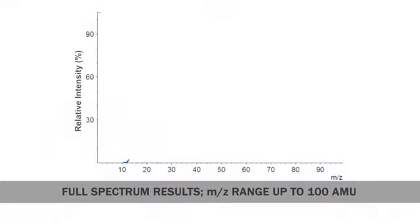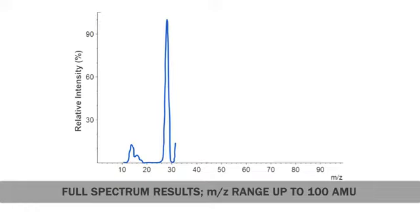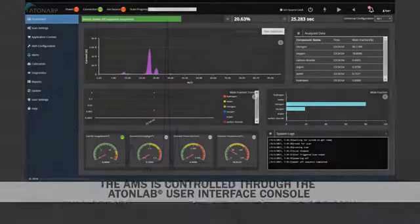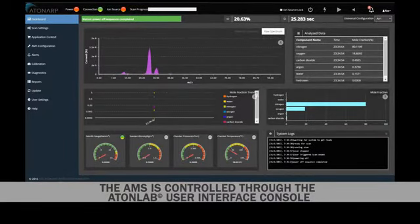This data is then translated into a mass spectrum, which shows the relative abundance of the sample ions at each mass-to-charge ratio. The intensity of every mass-to-charge ratio in the spectrum is recalculated by ATENARP's proprietary algorithm to provide quantitative chemical composition of the gas sample. This data output can be customized and uniquely configured for a specific user interface with real-time quantitative measurement results.